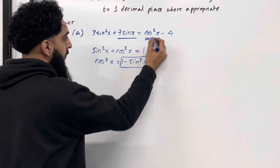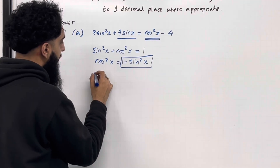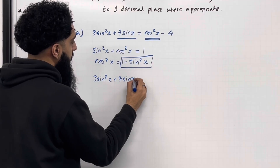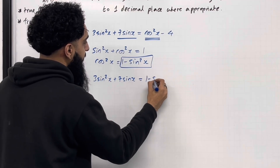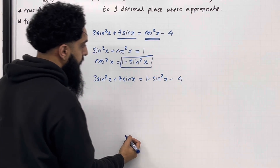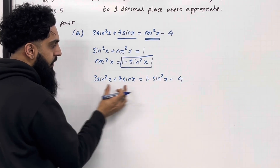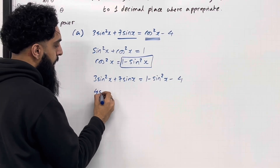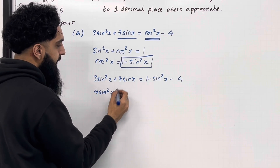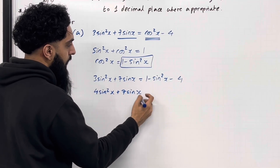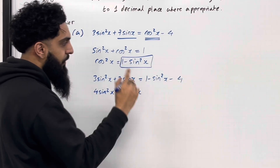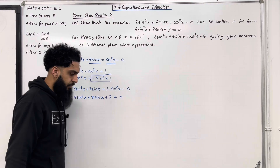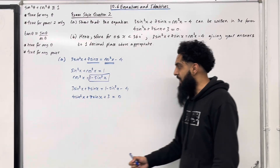Using the identity sin²x + cos²x = 1, we get cos²x = 1 − sin²x. Replacing cos²x gives 3sin²x + 7sin x = 1 − sin²x − 4. Taking −sin²x to the left-hand side: 3sin²x + sin²x = 4sin²x, and 1 − 4 = −3, which taken to the left-hand side becomes +3. So we get 4sin²x + 7sin x + 3 = 0, which is what was required in part A.